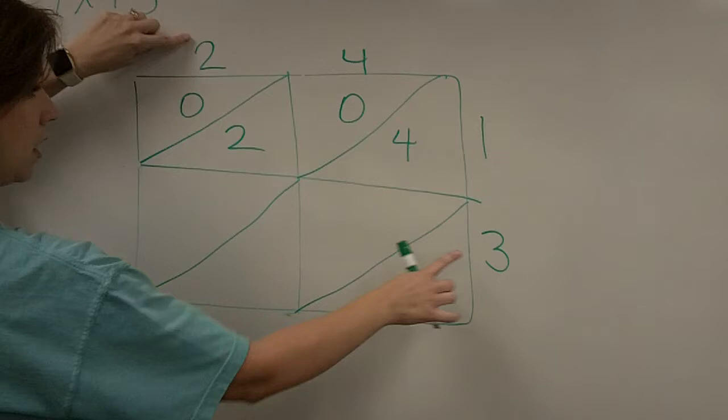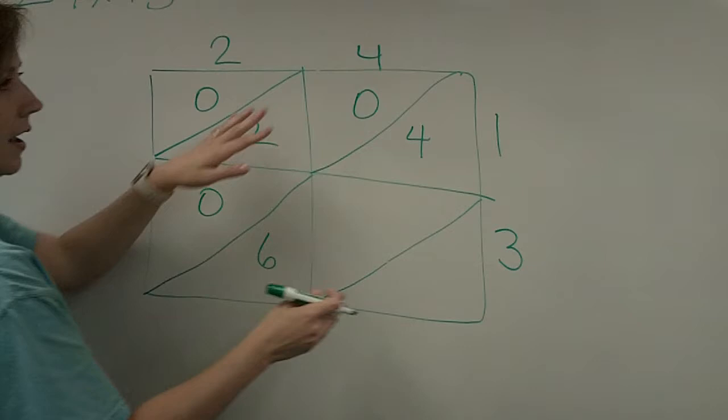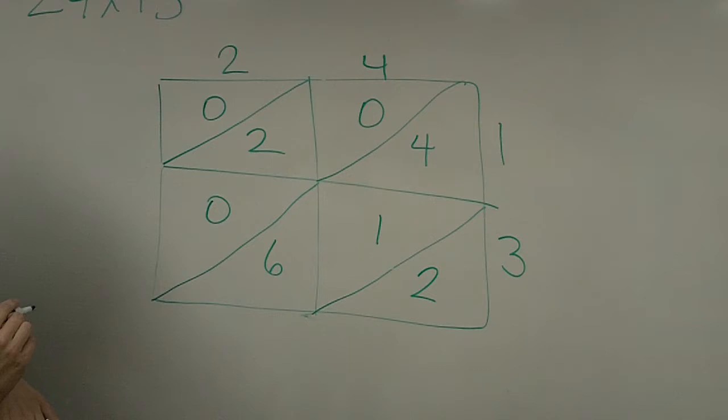And then we're going to come down to this bottom square. 2 times 3 is 6, so again, we're going to need 0, 6, because we've got to fill every triangle. And then lastly, 4 times 3 is 12, and so we're going to fill it in like that.